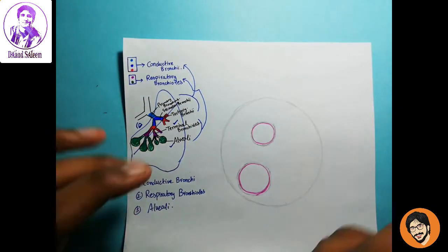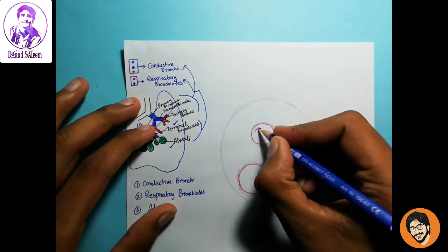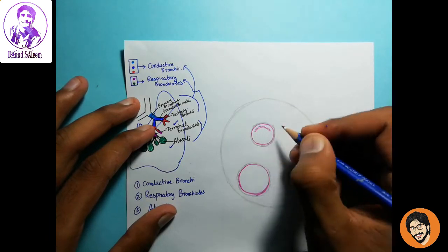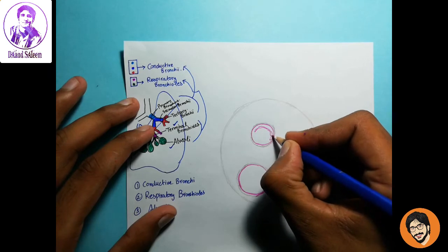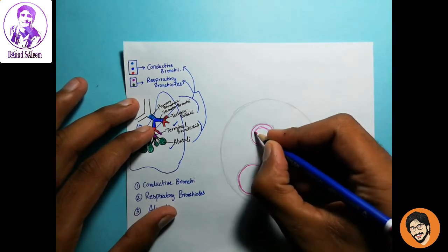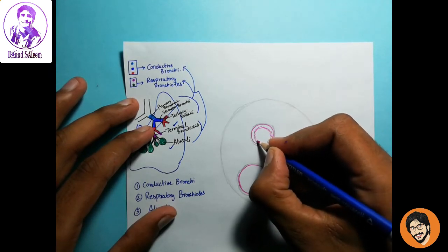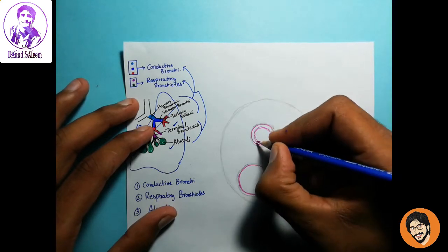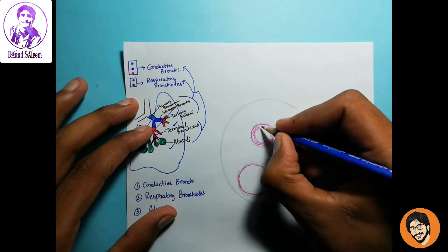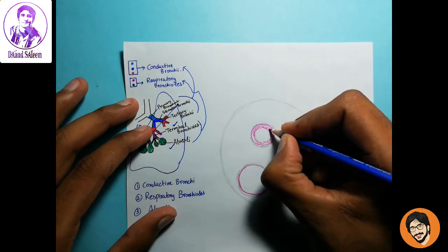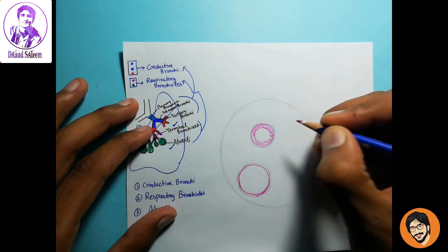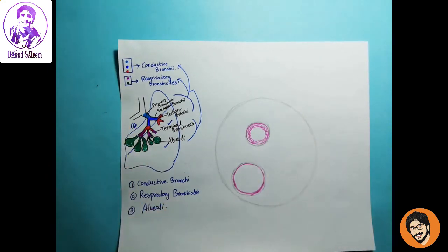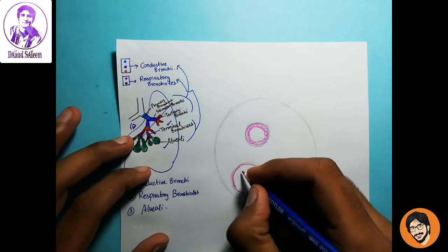Adventitia. Smooth muscles layer. Trachea posteriorly smooth muscle, but it is surrounded by smooth muscle layer. This is the smooth muscle layer. We will create the smooth muscle layer.